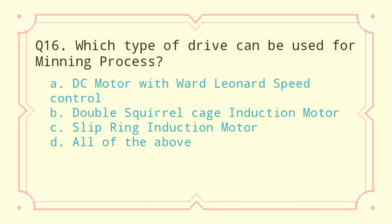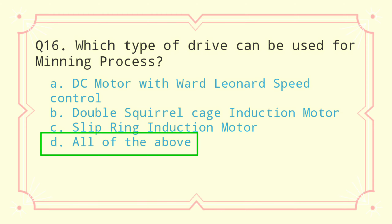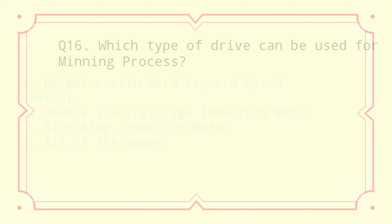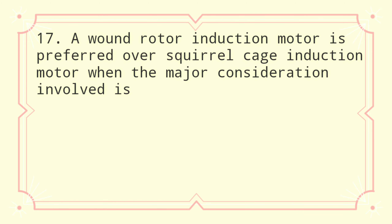Question 16: Which type of drive can be used for mining process? a) DC motor with Ward Leonard speed control, b) double squirrel cage induction motor, c) slip ring induction motor, d) all of the above. The correct answer is all of the above.